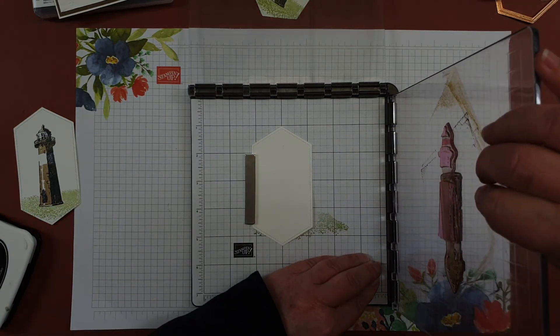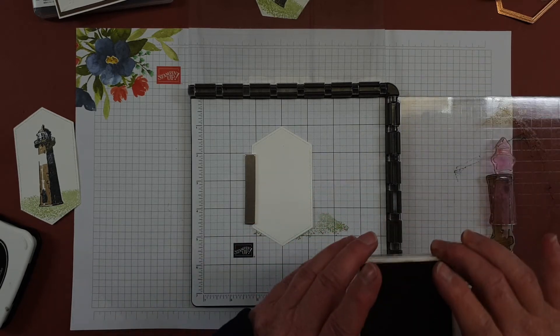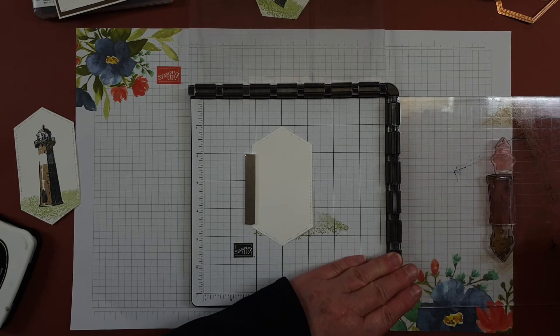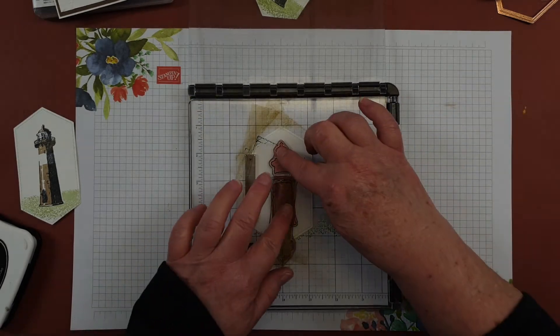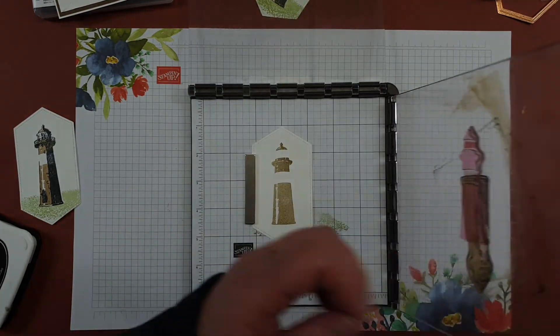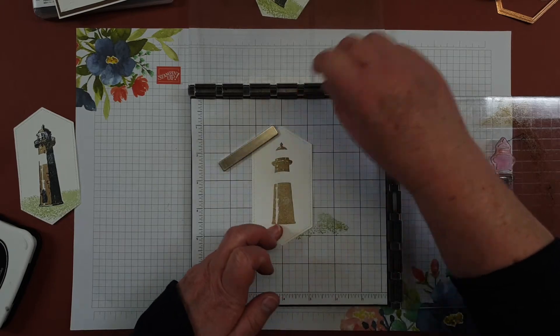And start with my Crumb Cake ink, give that a good push down and then I'm going to put the Pear Pizzazz on, just move that magnet a little bit first. Put some Pear Pizzazz on the bottom like that.